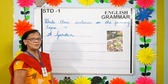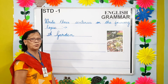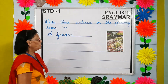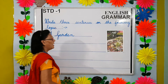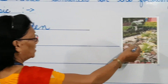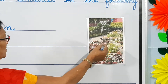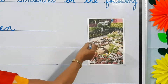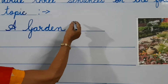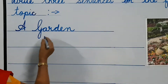Let's move on to the last topic. Students, can you name this picture? A garden. Now we shall write three sentences on a garden.